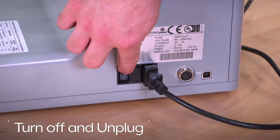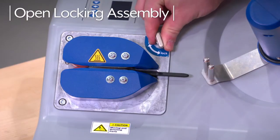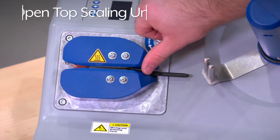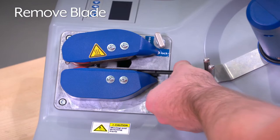To change the blade, first turn off the unit and unplug it. Then turn the knob to the open position. Open the top sealing unit. Pull the blade to the right and remove it from the machine.